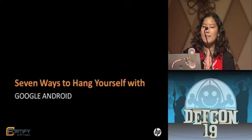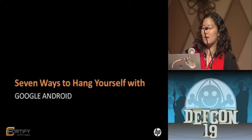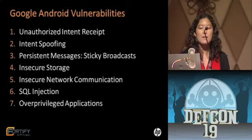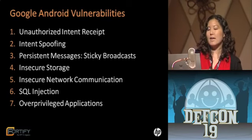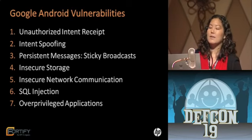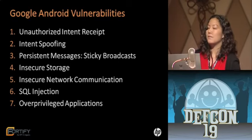Now that we've given you an introduction to Google Android, let's get into the seven ways to hang yourself with Android — the most common developer mistakes that will make your application vulnerable. I'll be talking about unauthorized intent receipt, intent spoofing, and persistent messages — all communication-related vulnerabilities — as well as insecure storage. Then Katrina will cover insecure network communication, SQL injection, and over-privileged applications.